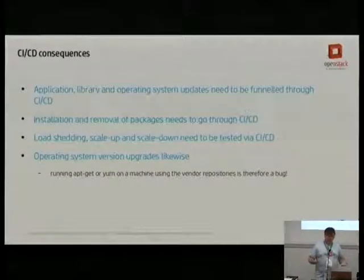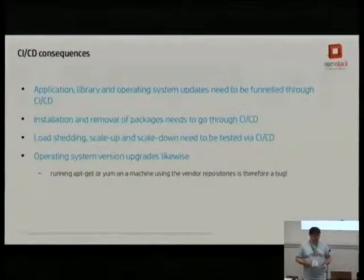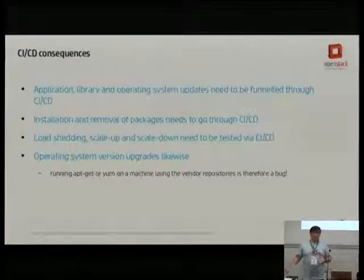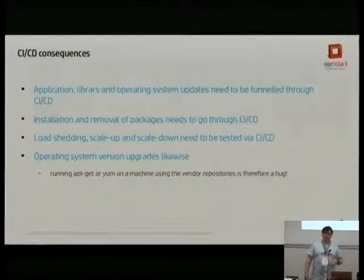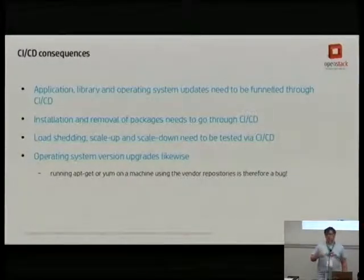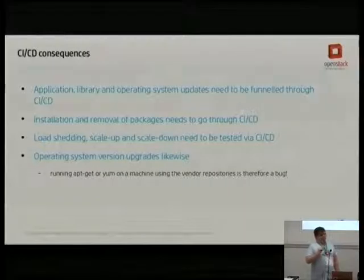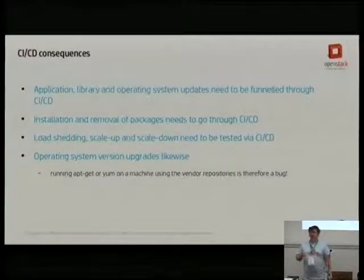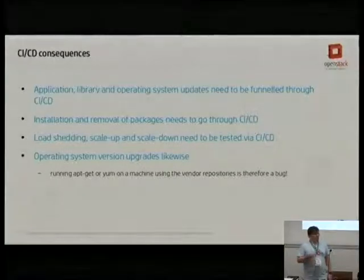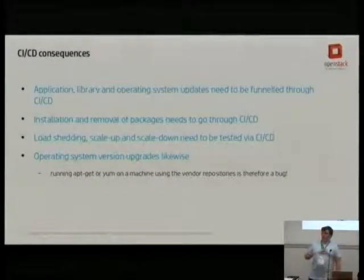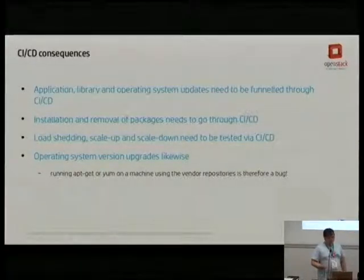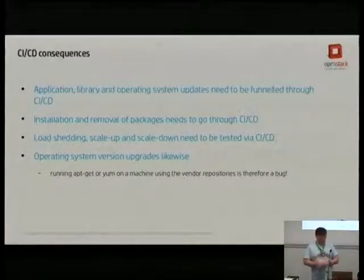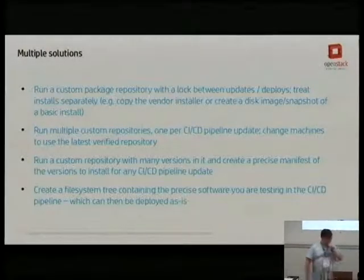Load shedding, scale up, scale down — same thing. And when you're doing a full OS version upgrade — RHEL 5 to RHEL 6, Ubuntu 12.04 to 12.10 — it's got to go through the same thing. Running apt or yum on a machine using vendor repositories is a bug in a continual deployment environment, because you're bypassing all of your QA and getting rid of the safety net that lets you do CD with confidence. Anyone who says 'I need to go in on that machine and install a package' is entirely missing the point.